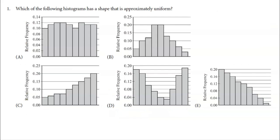The next question asks which histogram has a shape that's approximately uniform. Looking at the choices: C is skewed to the left, E is skewed to the right, B is symmetric and unimodal with a peak in the middle, D is bimodal. Choice A is uniform — uniform means all bins have roughly equivalent frequencies across the board. They don't have to be exactly the same, but roughly the same. The answer is choice A.